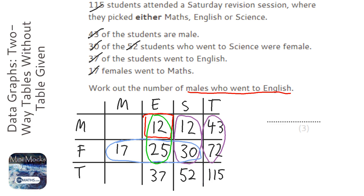Now I could carry on and complete the two-way table, but there is no need, because I've already found the answer. If I had some time later on in the test paper, I might try and complete the two-way table to check that that 12 works out — so let's do that.